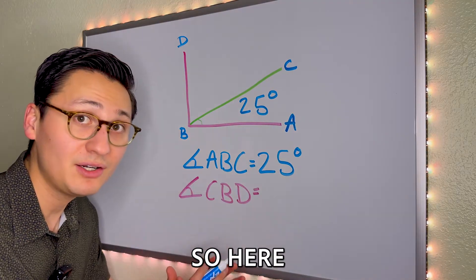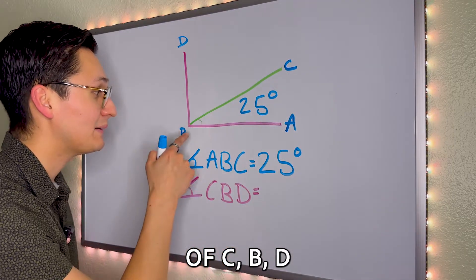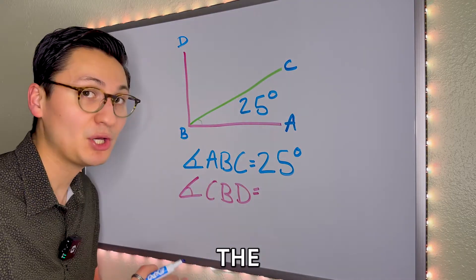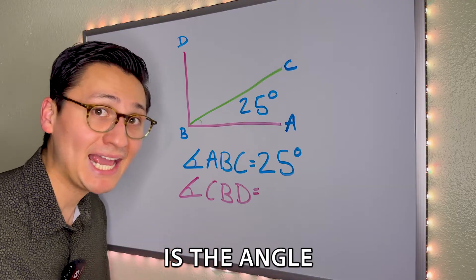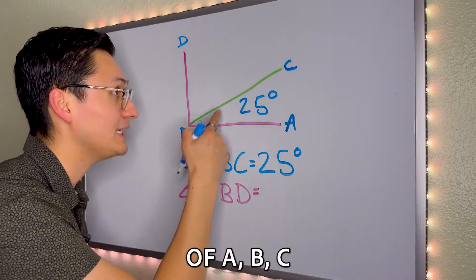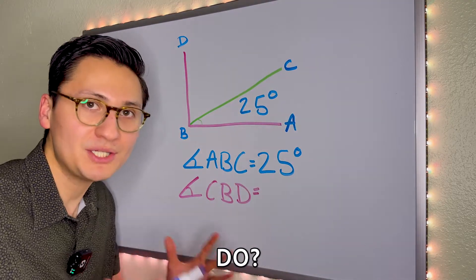So here we have to figure out the angle of C, B, D. The only thing we know is the angle of A, B, C, which is 25. So what should we do?